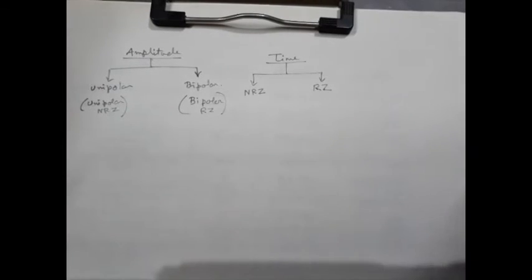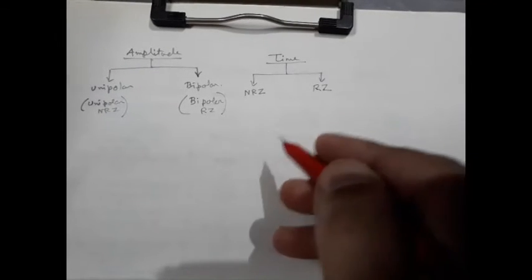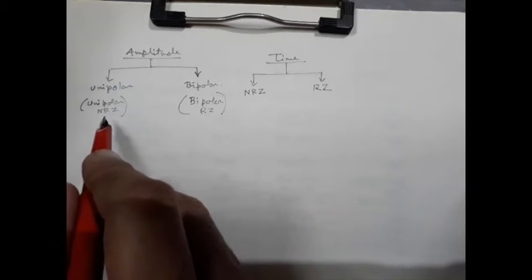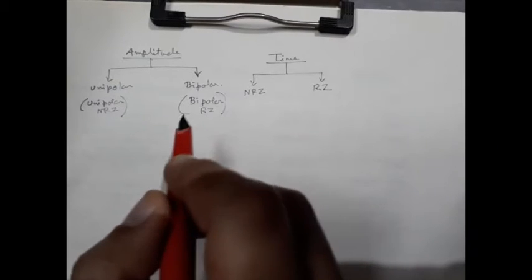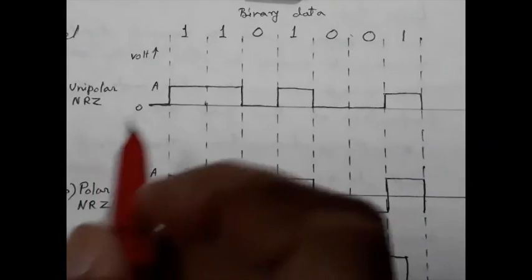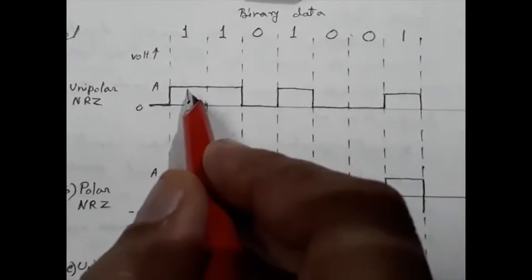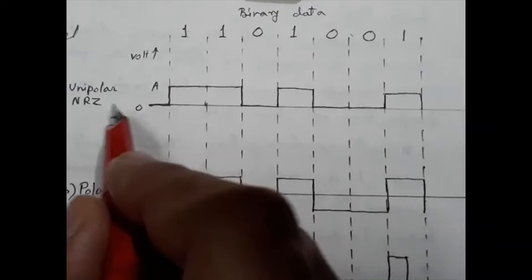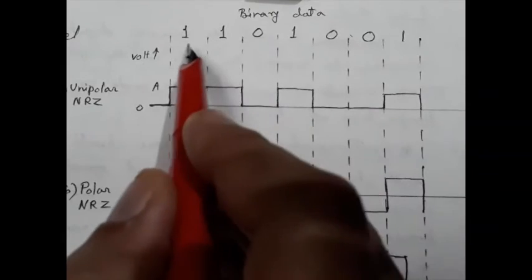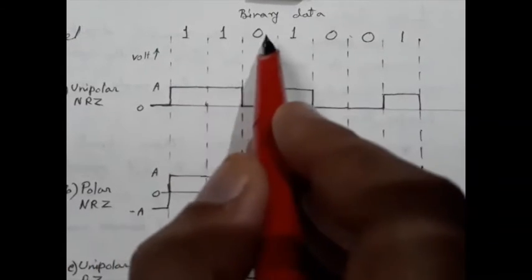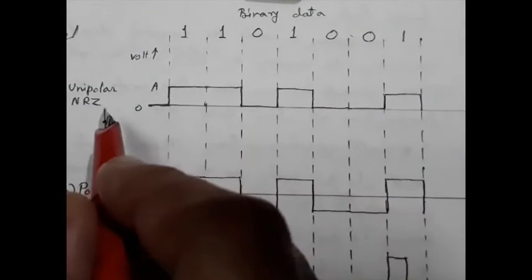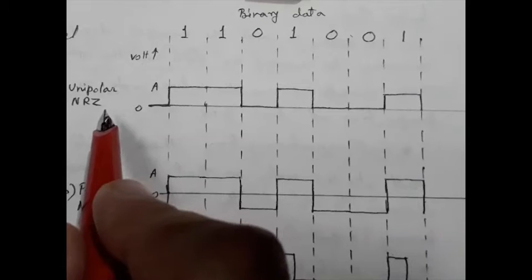We will now try to discuss different types of data formats one by one in a brief fashion. To understand the different data formats, we have arbitrarily chosen the data sequence: 1 1 0 1 0 0 1. We could have chosen a different data sequence. Now consider unipolar NRZ.